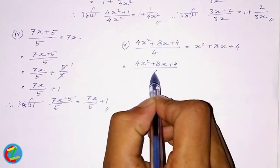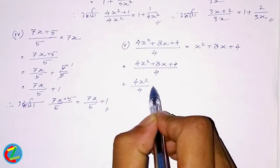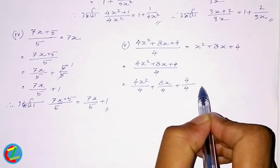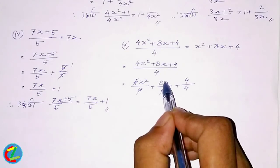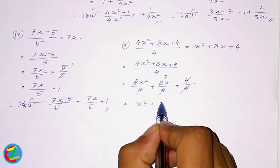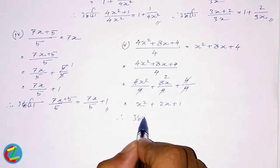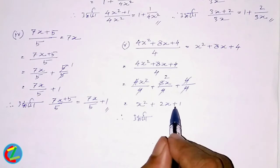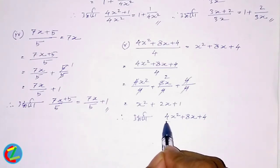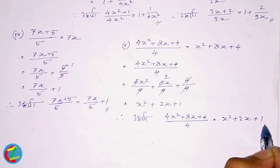4x² plus 8x plus 4 divided by 4 is equal to: x² divided by 4, 8x divided by 4, and 4 divided by 4. So ultimately, x² plus 2x plus 1. So 4x² plus 8x plus 4 divided by 4 is equal to x² plus 2x plus 1.